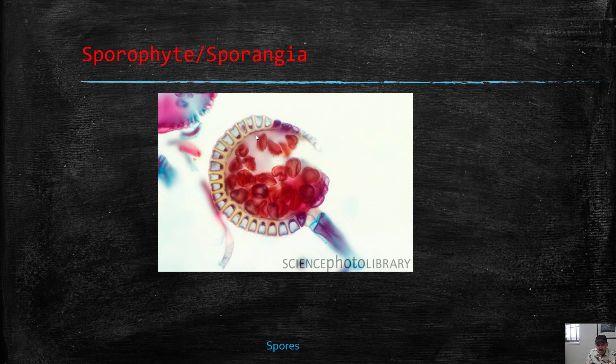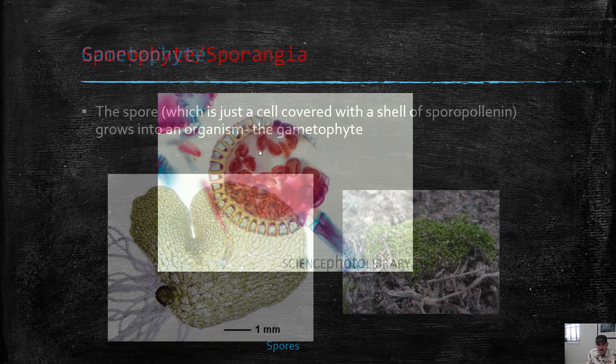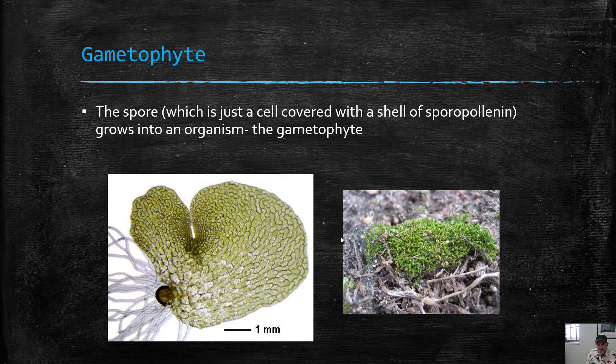Spores are produced in structures called sporangia. And gametophytes can be big, kind of big in the case of mosses, the big green leafy thing. Or in the case of ferns and some other plants that we'll look at later, they're smaller.